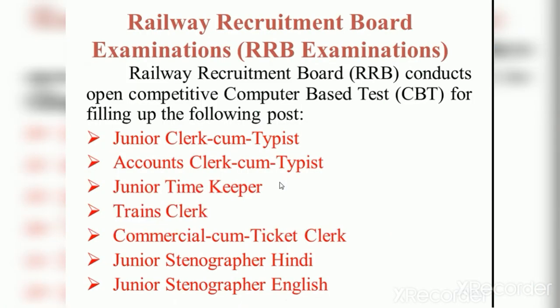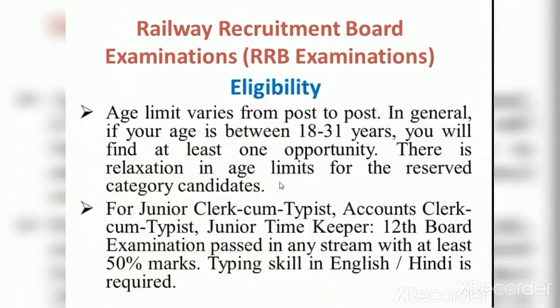Next is the RRB — Railway Recruitment Board examination for 12th pass students. The Railway Recruitment Board conducts an open competitive online computer-based test. Postings include Junior Clerk Typist, Accounts Clerk Typist, Junior Timekeeper, Trains Clerk, Commercial Clerk, Junior Stenographer, and Junior Stenographer in English. Age limit is 18 to 31 years, with relaxation for reserved candidates.